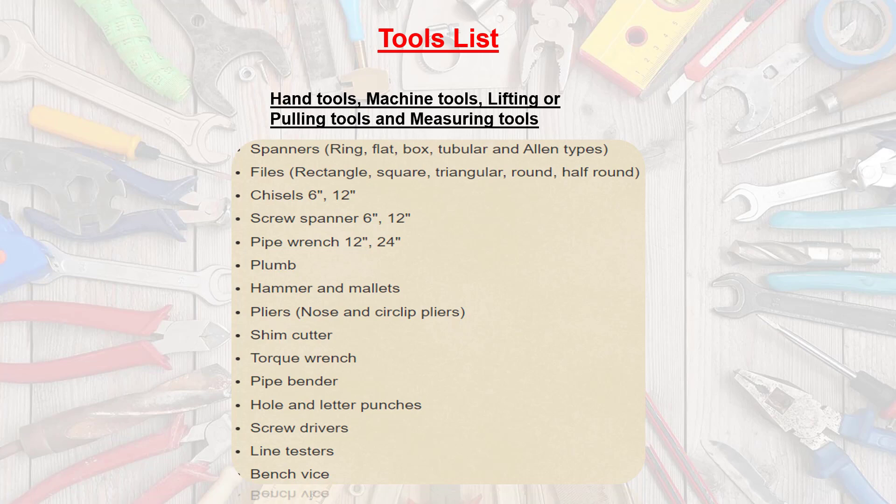Hand tools include: spanners (ring, flat, box, tubular, and Allen types), files (rectangle, square, triangular, round, half-round), screw spanner 6-inch and 12-inch, pipe wrench 12-inch and 24-inch, plumb, hammers and mallets, pliers (nose and circlip), shim cutter, torque wrench, pipe bender, hole and letter punches, screwdrivers, line testers, and bench vise.